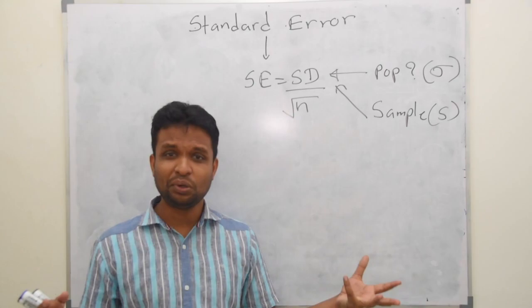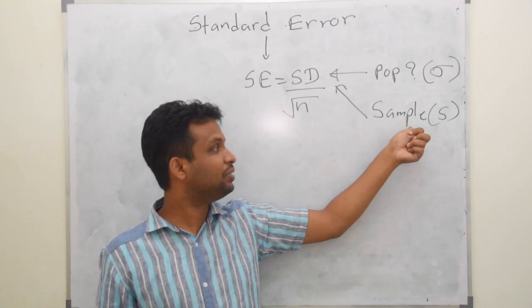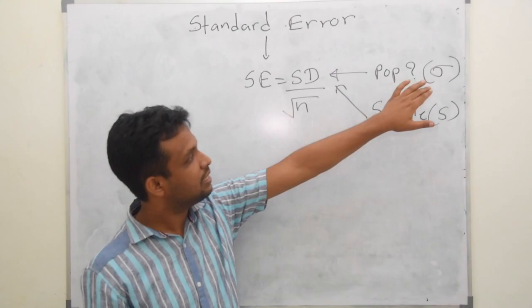Is it true that we can substitute sample for population standard deviation? Because the sample and population are totally different. Population standard deviation is sigma, and sample standard deviation is S. So now we have the question: is it sigma or S?